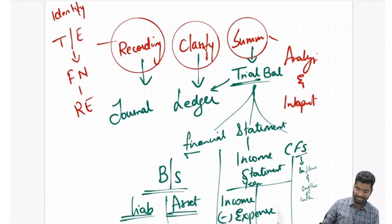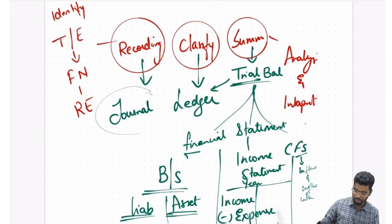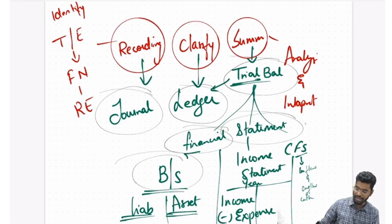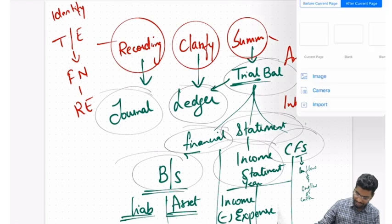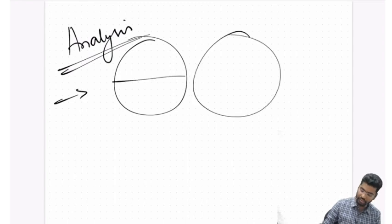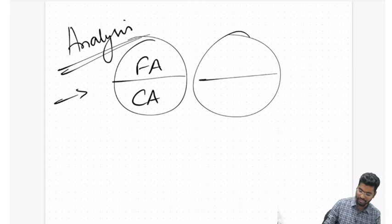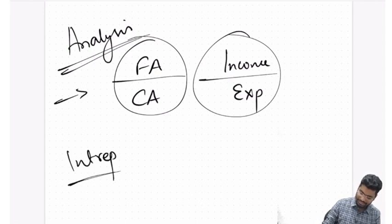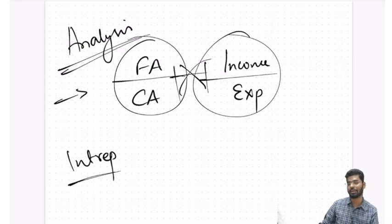To summarize: accounting is about identifying transactions of financial nature related to an enterprise — recording through journal, classifying through ledger, summarizing through trial balance leading to financial statements. Analysis helps classify things under particular categories — fixed assets, current assets, income, expense. Interpretation means trying to find relationships between various items in the balance sheet and income statement.